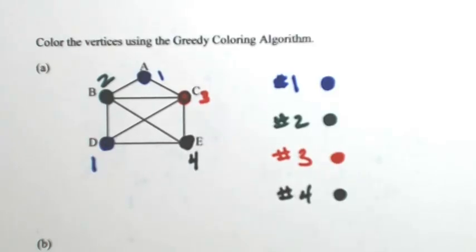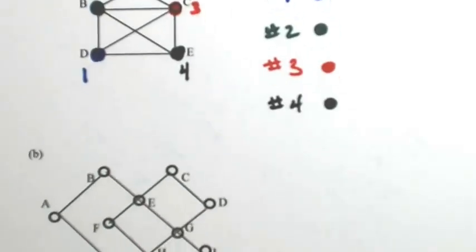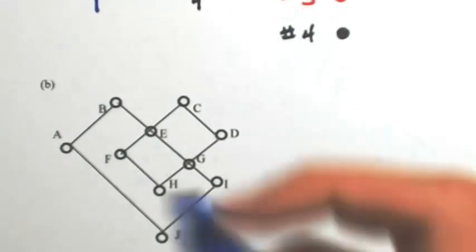Let's look at another one. We're going to use the same order again, so blue is going to be number 1. Starting at letter A, we're going to start with color number 1.